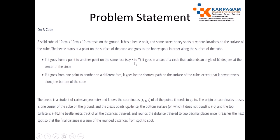These two constraints are important. If it goes from a point to another point on the same face, say X to Y, in this situation the Z axis will not change. The distance may be calculated by a different formula. If it goes from one point to another point on a different face, it goes by the shortest path on the surface of the cube, except that it never travels along the bottom.